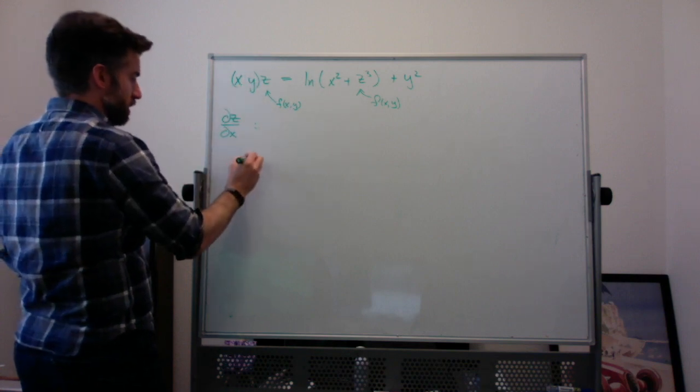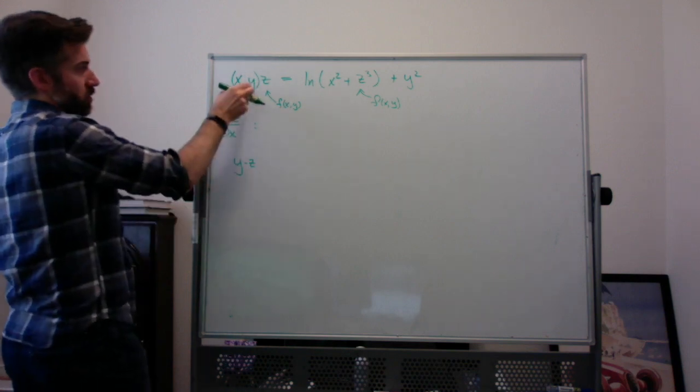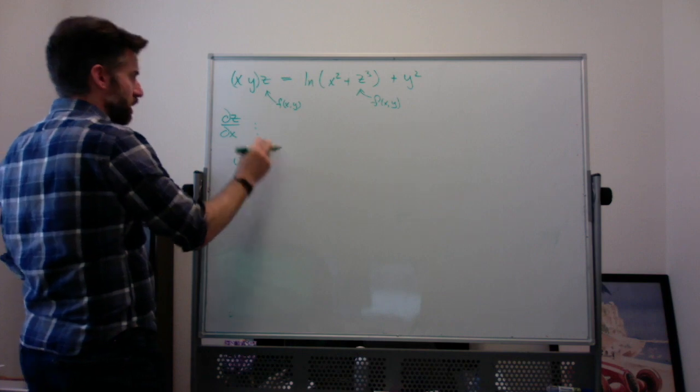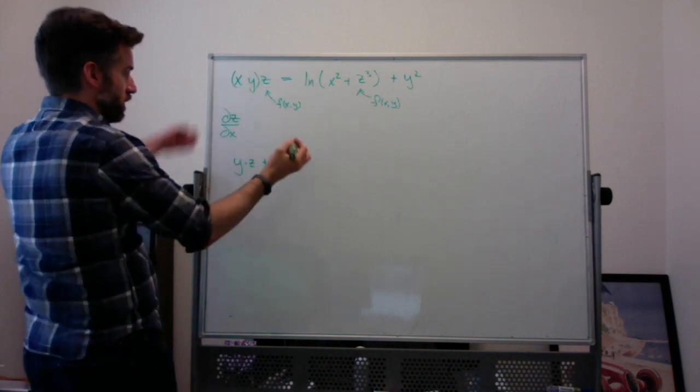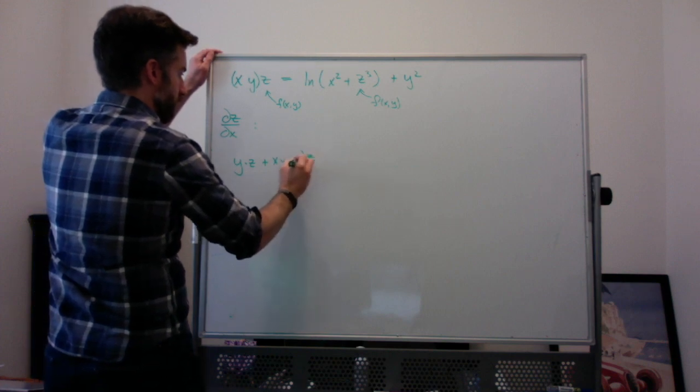The derivative of z, no sorry, times z, right, product rule. So the derivative of this times this plus this times the derivative of this, which is ∂z/∂x.